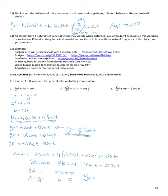The general solution for number 1 is y_g = k1·cos(3t) + k2·sin(3t) + 1/8·cos(t).